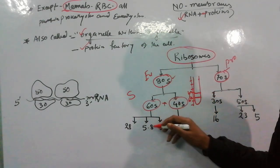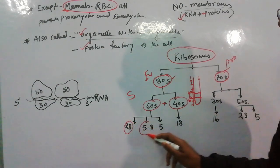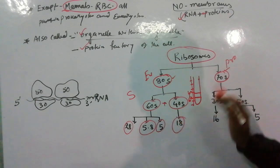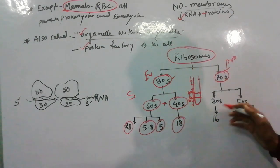And 60S subunit is made of 28S, 5.8S and 5S, and 40S subunit is made of 18S. This is very important to remember. In questions, these questions are asked.